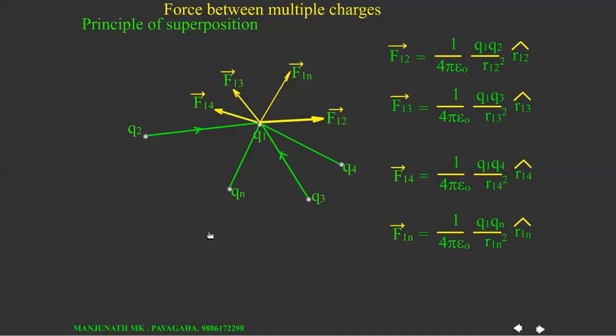So now, the resultant of all these forces is given by F1. That is, the force on charge 1 is equal to F12 plus F13 plus F14 plus dot dot dot plus F1n. This is the vector addition of all the forces that gives the resultant.